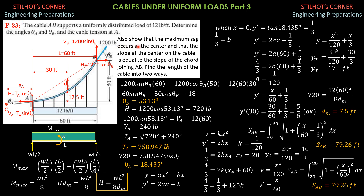Also show that the maximum sag occurs at the center, and that the slope at the center of the cable is equal to the slope of the cord joining AB. So if this is the imaginary cord joining AB, the tangent at the center of the cable will be parallel to that — and that is why this is the maximum sag at the center.